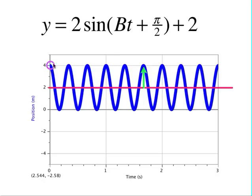For our graph, you'll notice that we start at the highest point of the curve. So that means we have a phase shift of pi over 2.